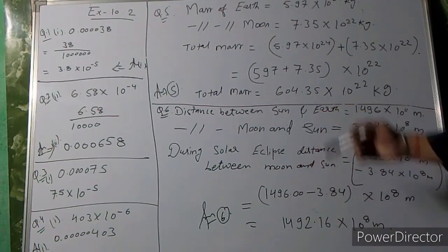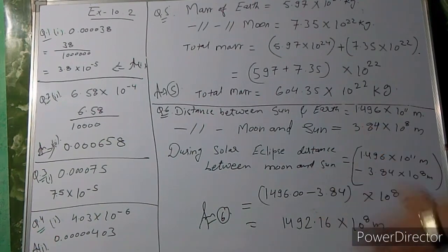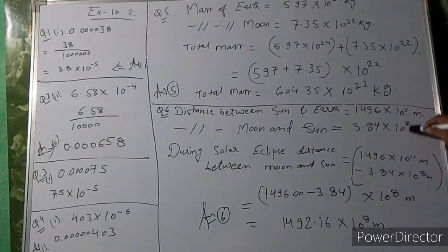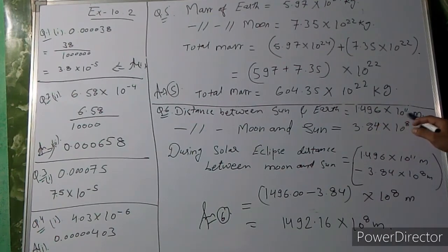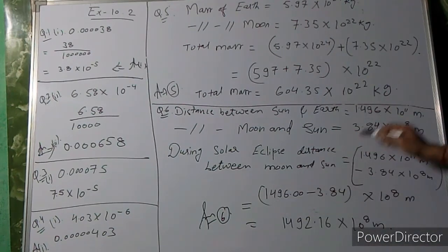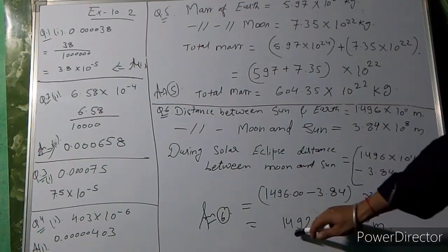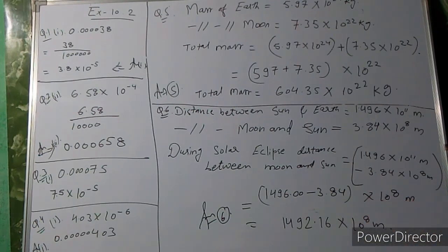Question 6: distance between Sun and Earth is given as 1.496 × 10¹¹ m, and distance between Moon and Sun is 3.84 × 10⁸ m. During solar eclipse, find the difference. Convert 10¹¹ to 10⁸ by multiplying by 1000 (10³), so 1.496 × 10¹¹ = 1496 × 10⁸. Subtracting: 1496 − 3.84 = 1492.16. Answer: 1492.16 × 10⁸ metres. Exercise 10.2 is now complete.